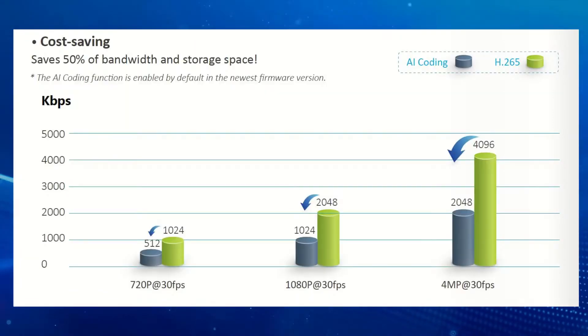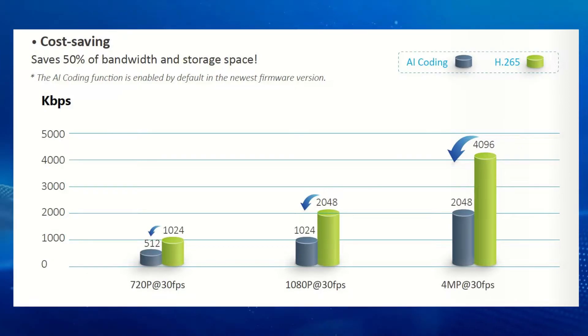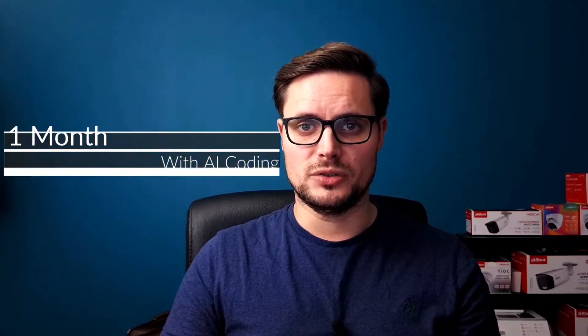By doing this the camera saves lots of bandwidth — you can save up to 50% of the bandwidth compared to regular H.265 compression. So imagine you have a 1TB hard drive with four high-resolution cameras: where before you could only get maybe 15 days of storage, now you can get a whole month just by using the new AI coding. That's a huge improvement.